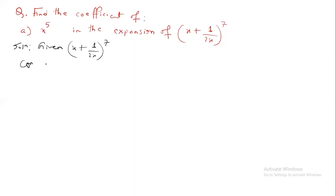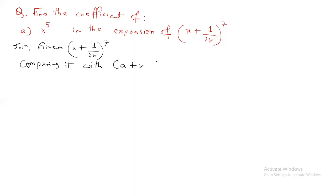Comparing with the standard general form a + x whole power n, so a = x, x = 1/(2x), n = 7. Therefore the general term T(r+1) = nCr · a^(n-r) · x^r.